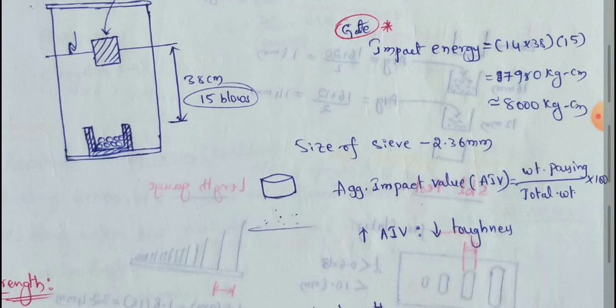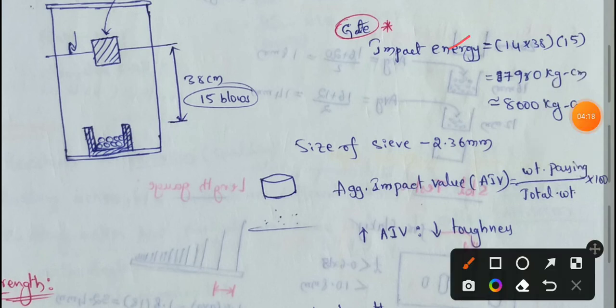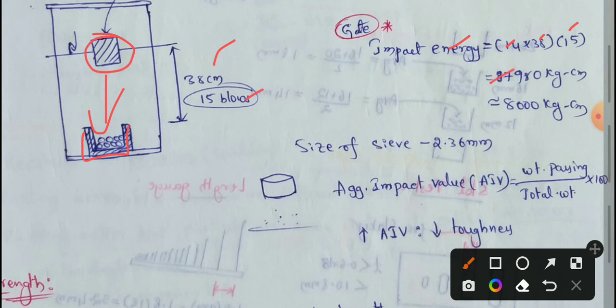Impact energy equals 14 kg hammer weight multiplied by 38 cm drop height multiplied by 15 blows, which equals 7,980 kg·cm — approximately 80,000 kg·cm total impact energy.